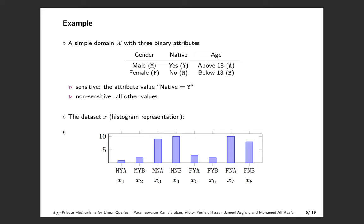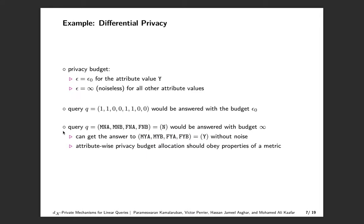Before delving into the technical details of our generic strategy, we will start with a working example. Consider a simple domain with three binary attributes: gender, native, and age. We assume that the attribute value native equals y is considered sensitive and all other values are non-sensitive. Since we have three binary attributes, there will be eight elements in the data universe. We denote them by x1, x2, up to x8. For instance, x1 represents an above-18 native male. This figure shows an example dataset X as a histogram from this domain. Now we want to respond to some sensitive and non-sensitive queries on this dataset. Using differential privacy, the data custodian might wish to use some privacy budget epsilon_0 for the sensitive attribute value y, and infinity for all other attribute values.